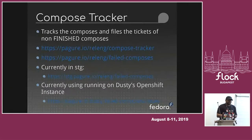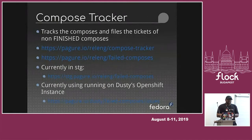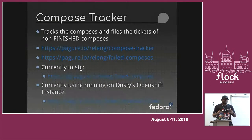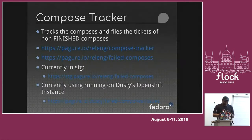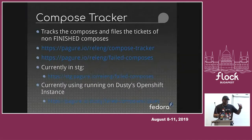The Compose Tracker was actually started by DustyMabe, and release engineering took from that idea and started exploring more options around it. What it does is look at the Fedora messages that release engineering sends out, listen to those messages, and see if a compose is anything other than finished. There are three statuses for composes: finished, which is great; and then finished incomplete and doomed.